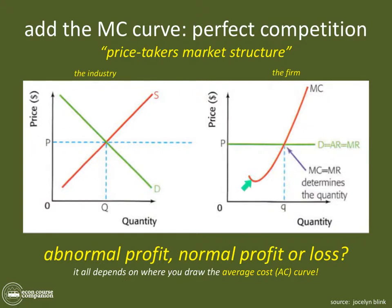The next thing we do is draw the marginal cost curve. Then you stop — because where MC equals MR, you have found the most important piece of the puzzle for firms: it is their profit-maximizing level of output.